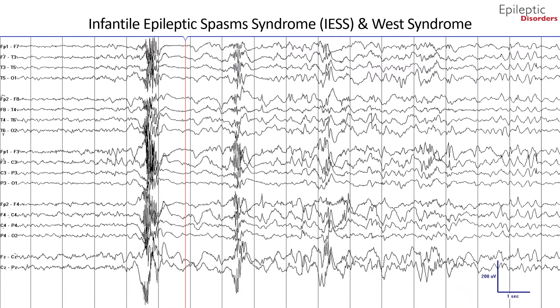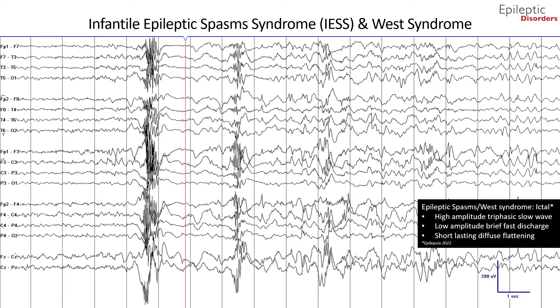This bipolar montage EEG shows a typical pattern of epileptic spasms, which are brief muscle contractions that predominate in the proximal or truncal muscles and cause sudden flexion, extension, or mixed movements. Clinically, patients with epileptic spasms may have isolated spasms, but they most frequently occur in clusters. They can be subtle, limited to only grimacing, eye deviation, and head nodding, or even subclinical. The ictal recording of an epileptic spasm is characterized by high amplitude, generalized, sharp or slow wave, followed by low amplitude fast activity, which may appear as a brief electrodecrement.